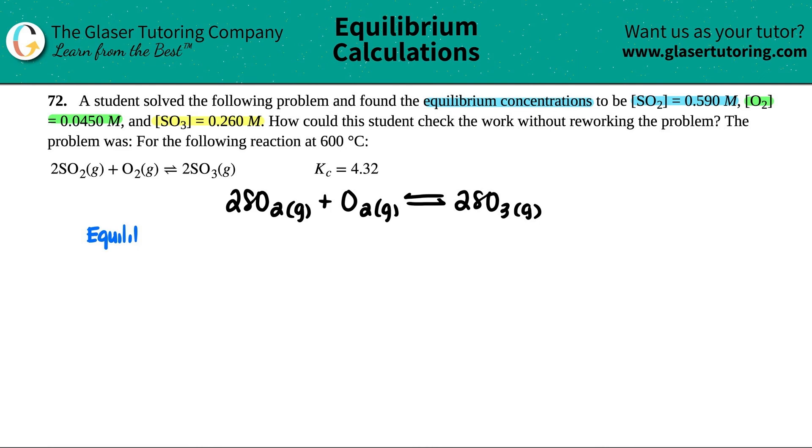They said at equilibrium, maybe I'll put at equilibrium, we found out that the concentration of SO2 was 0.590 molarity, the O2 was 0.0450 molarity, and then the SO3 was 0.260 molarity.